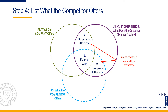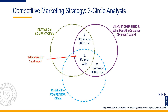Areas A and C are the points of difference, or PODs — the classic competitive advantage areas where a firm offers unique value that matters to customers that its competitors do not or cannot offer. You will seek to build and defend Area A — what is valued by the customer that is only available from you — and attenuate Area C.